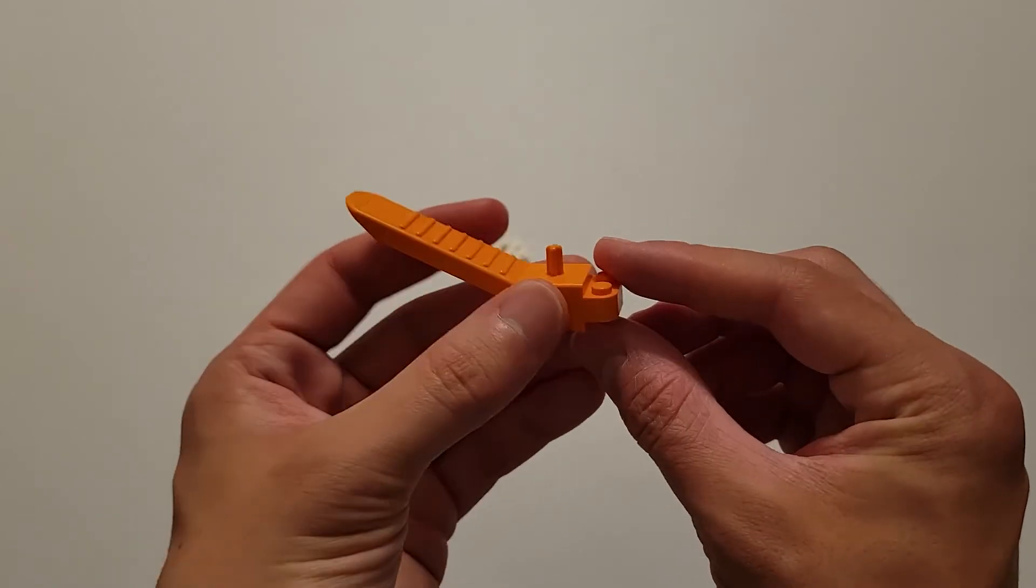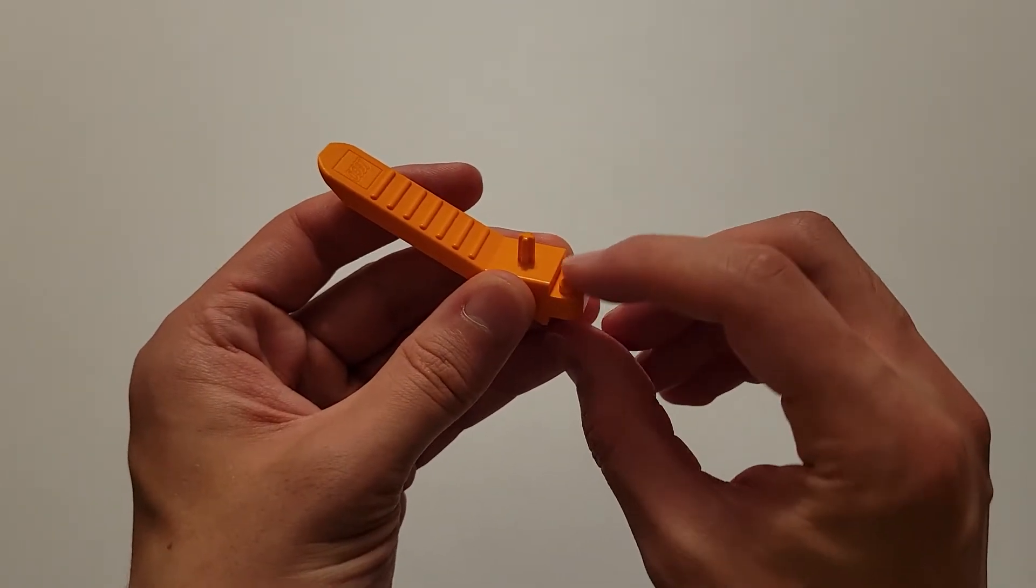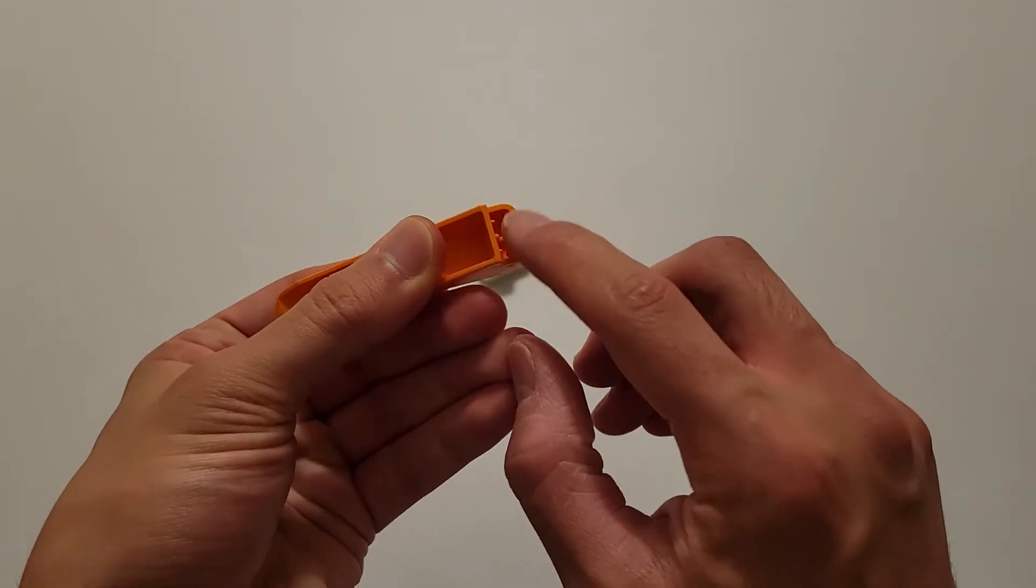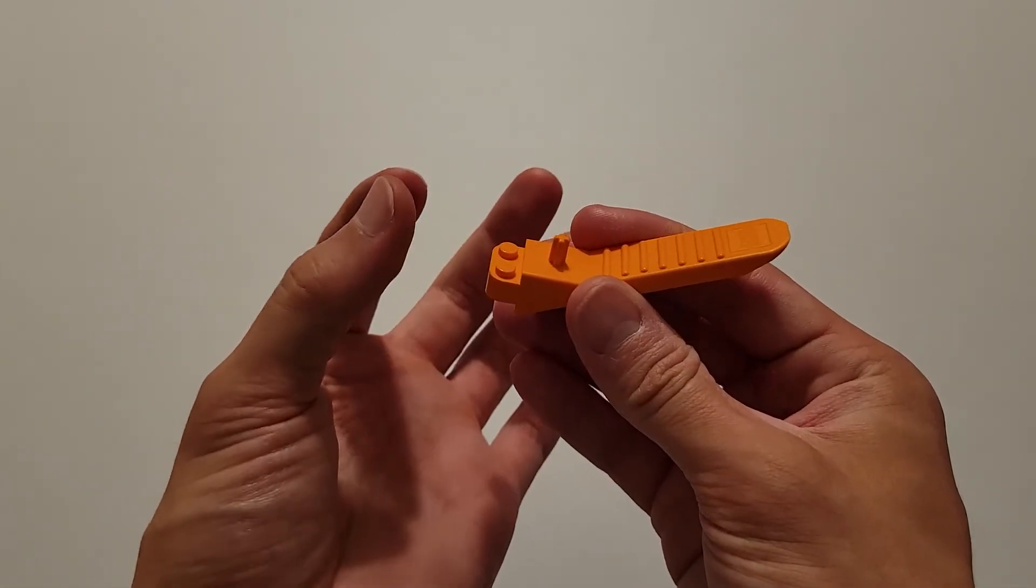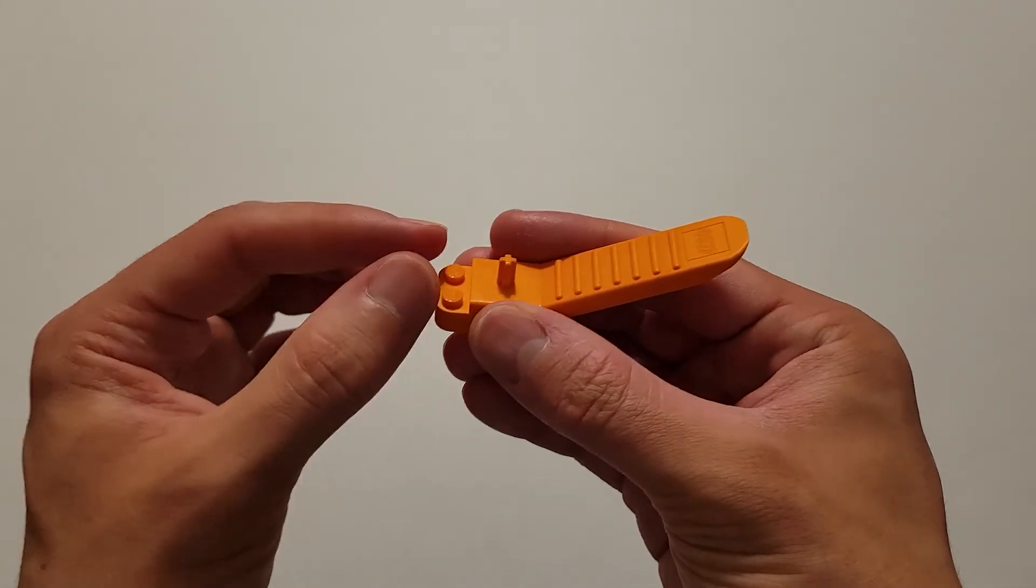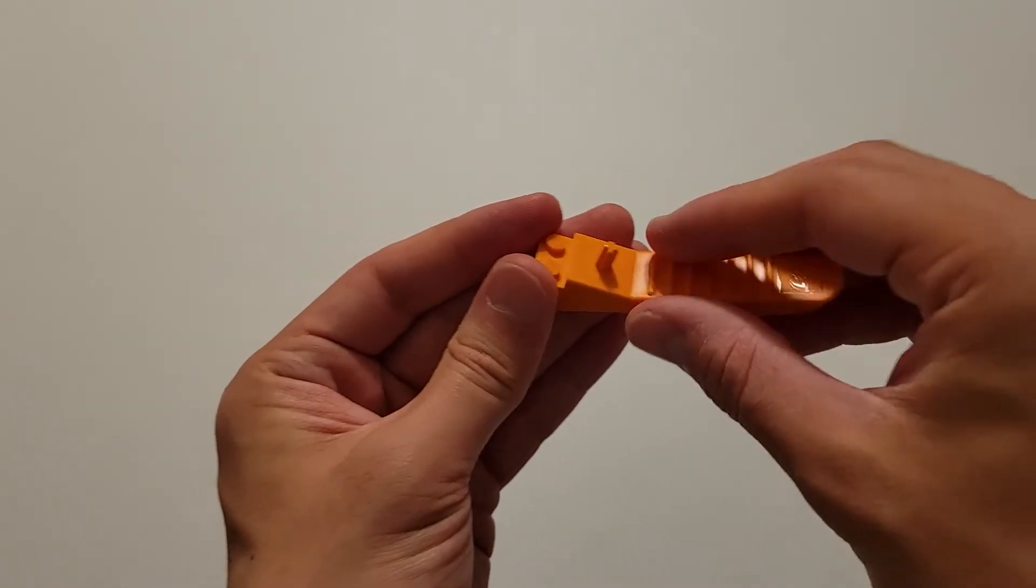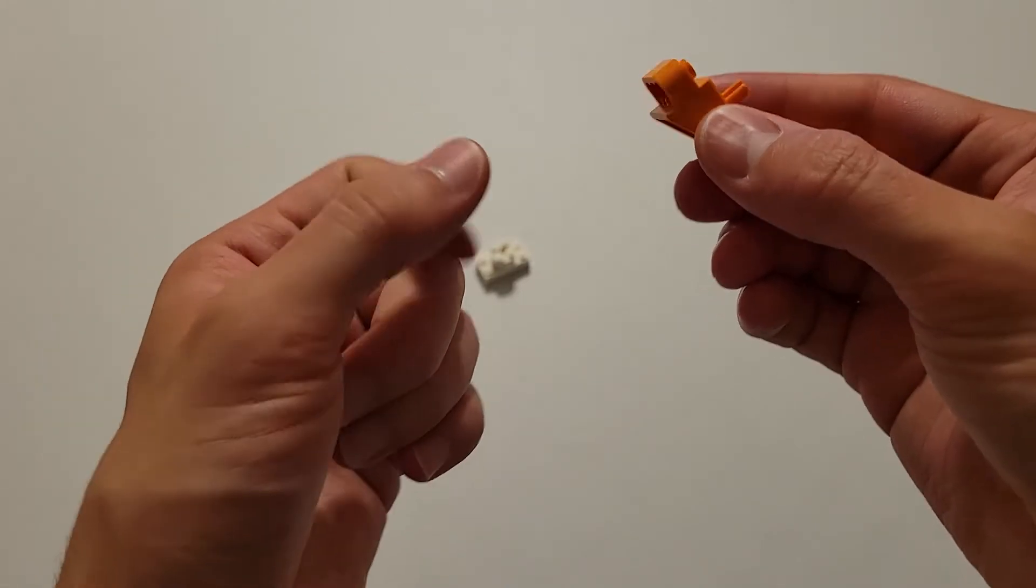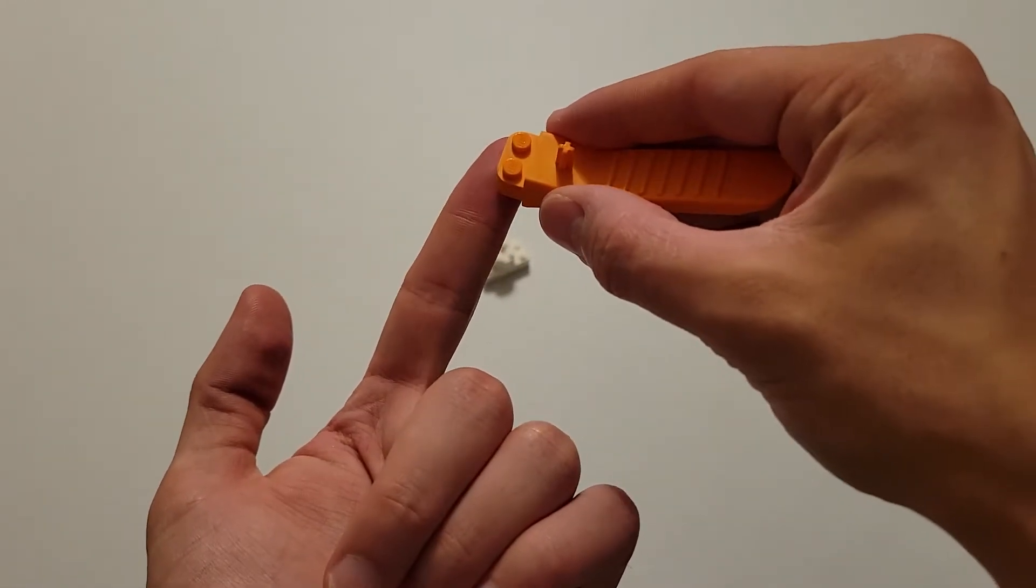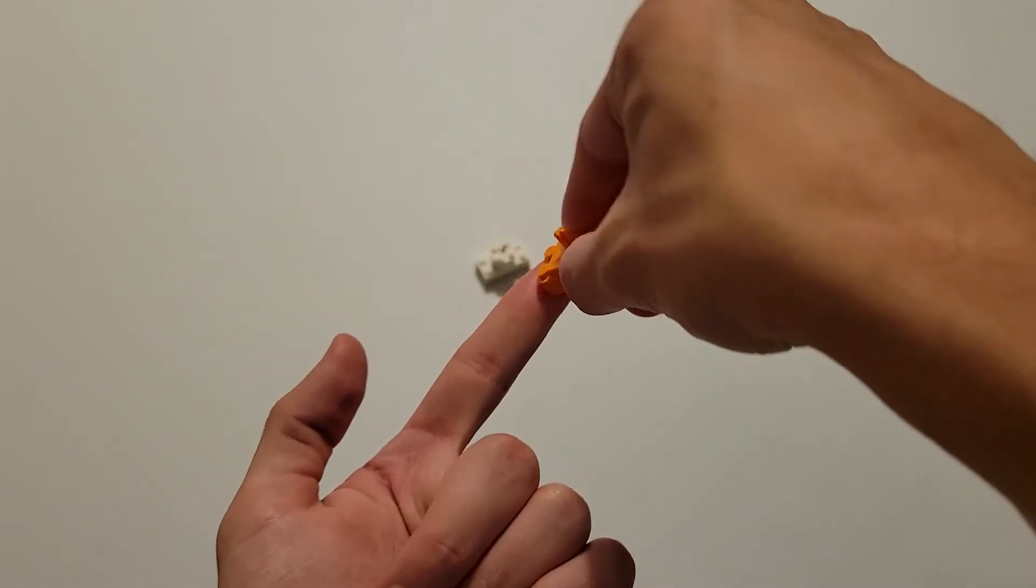And then finally, over here, we have these two studs here. And on the bottom, we have these two here. And so what you can do is if you have a piece on the bottom that you're trying to get off, you can stick these two studs to it and then pry it off like this. Or in the opposite way, if you have a piece on top, you can stick this on top like this and then pry it off that way.